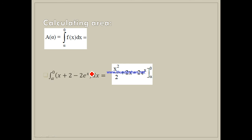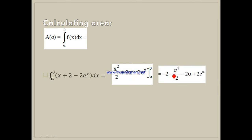The integral of 2 is 2x; the integral of 2eˣ is 2eˣ, evaluated between 0 and α. Now replace: we compute capital F(0) minus F(α). F(0): we get 0 + 0 − 2e⁰ = −2. Minus bracket: substituting x = α, we get α²/2 − 2α − 2eᵅ, and with the minus sign in front of the whole expression, we get plus 2eᵅ.